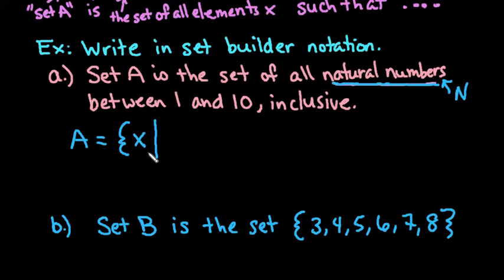So set A is the set of all values X such that - what we do is we write X greater than or equal to the lowest value, or you could say 1 is less than or equal to X and also less than or equal to 10, because it's inclusive. That's why I drew the line underneath it.